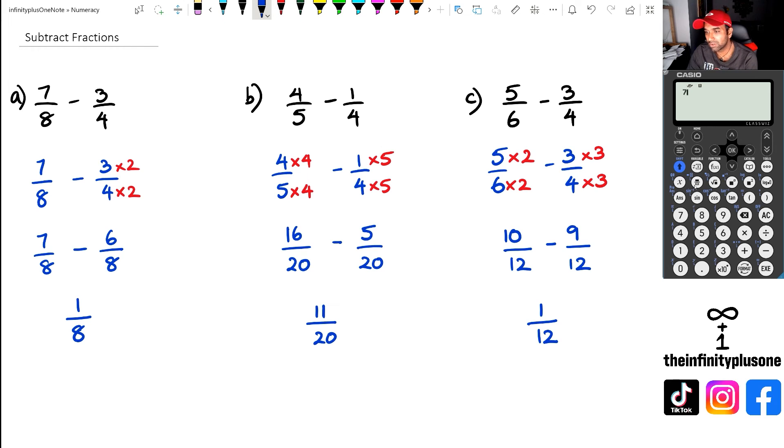In this particular calculator, I've got a fraction button, so I'm going to click on that. I've got 7 over 8 there, and then I'm going to move along and do minus 3 over 4. And as you can see, I am getting an answer of 1 over 8.